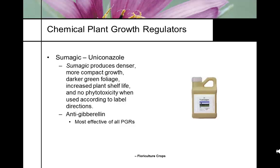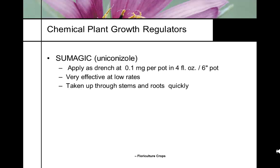Cycocel is one of the oldest plant growth regulators on the market — it's actually a salt (chlormequat) — usually applied in combination with B9. Sumagic and Bonsai are sister chemicals; uniconazole was the first to come out and is a lot more active. When Sumitomo created Sumagic, they did not patent paclobutrazole alongside it, so they lost that patent.